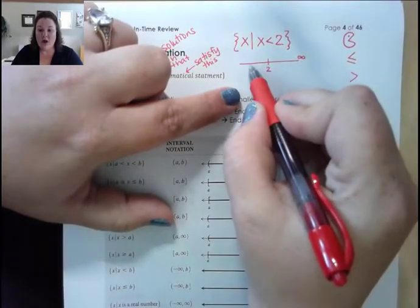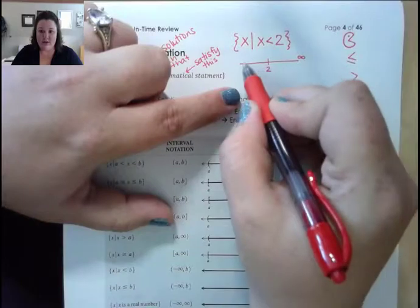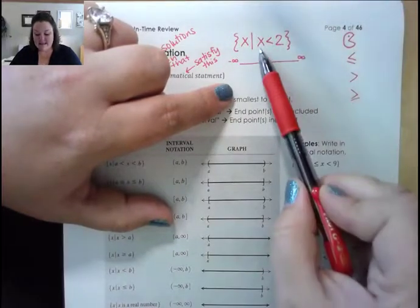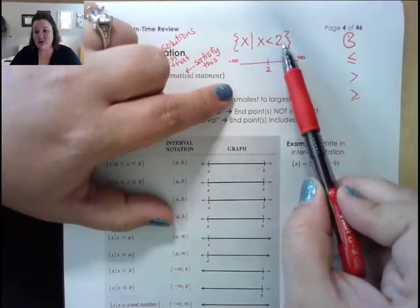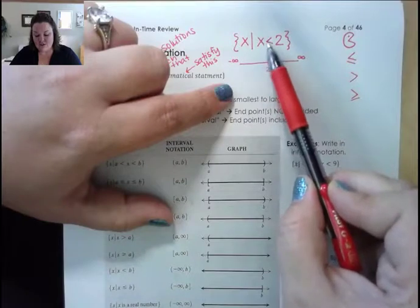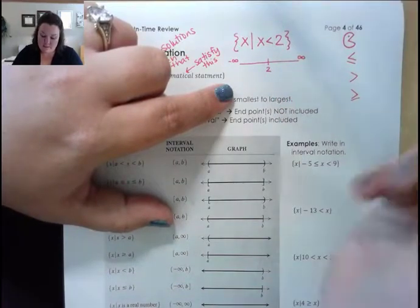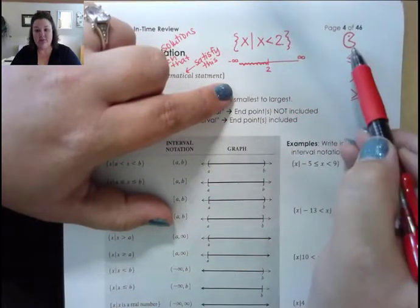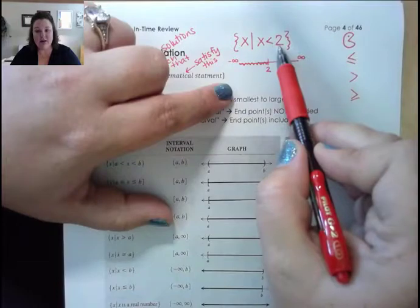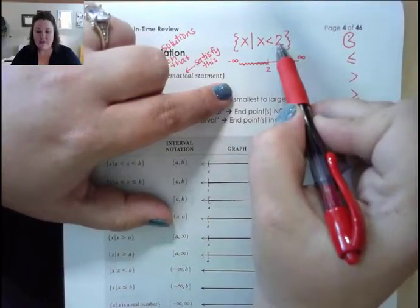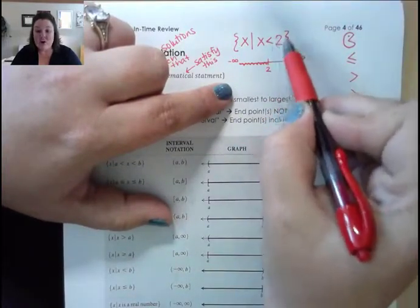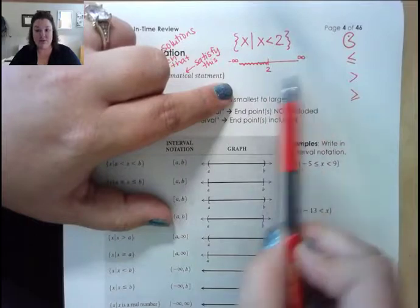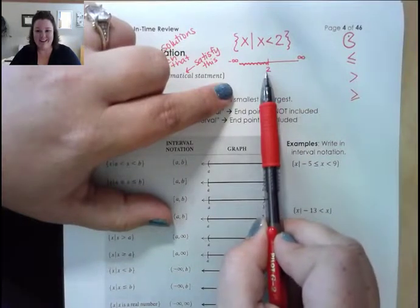Numbers smaller than 2 — so 1, 0, negative 1 — go all the way down to negative infinity. I'm talking about x's that are less than 2, so all of my answers are going to be to the left of 2. Pac-Man eats the bigger number, so if I make this into a Pac-Man, he's eating 2. So 2 is bigger than all of my solutions, meaning there shouldn't be any solutions bigger than 2. That's our shaded solution.